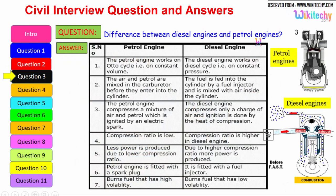Let us see the difference between the diesel engine and the petrol engine. So the petrol engine works on Otto cycle, therefore on constant volume, whereas the diesel engine works on the diesel cycle on constant pressure. The air and the petrol are mixed in the carburetor before they enter into the cylinder. So the fuel is fed into the cylinder by a fuel injector and is mixed with the air inside the cylinder. The petrol engine compresses a mixture of air and petrol which is ignited by an electrical spark. The diesel engine compresses only a charge of air and ignition is done by the heat of compression.